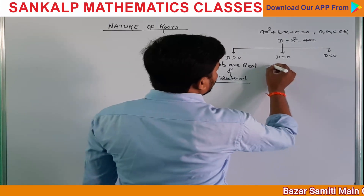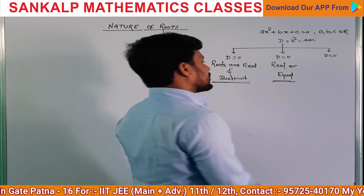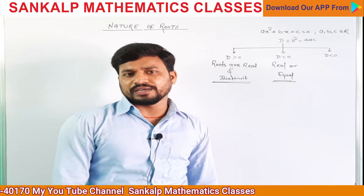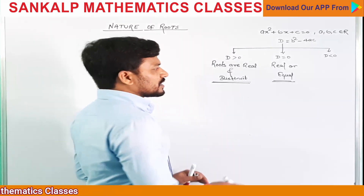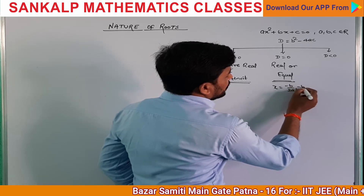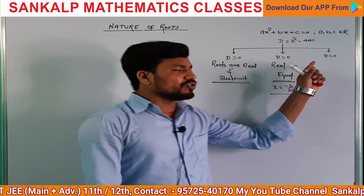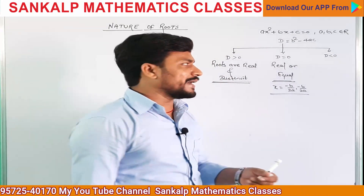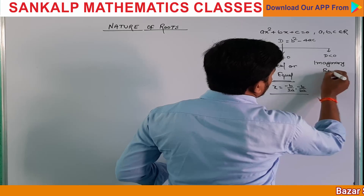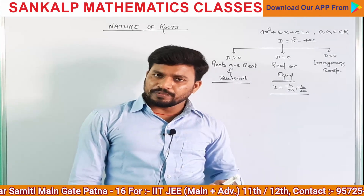Second condition जब D की value 0 हो जाएगा — तो आपकी quadratic equation की roots real और equal हो जाएगी। और इस condition में roots x = -b/2a ही दोनों roots होगा। लेकिन तीसरी condition D less than 0 — तो इसमें roots imaginary होगा। यही तीन condition है nature of roots के लिए।